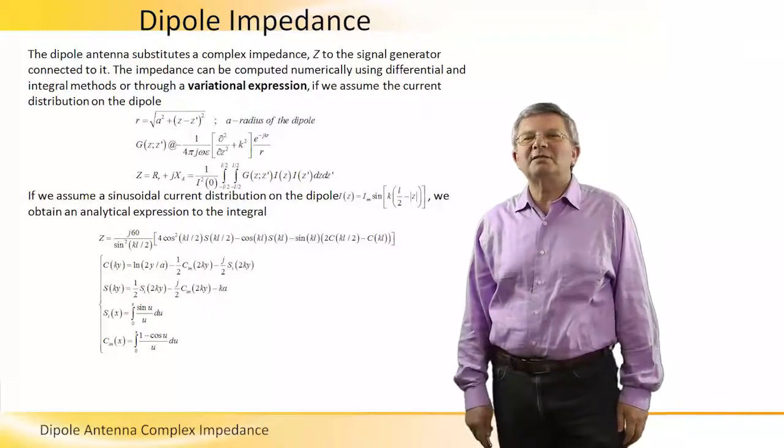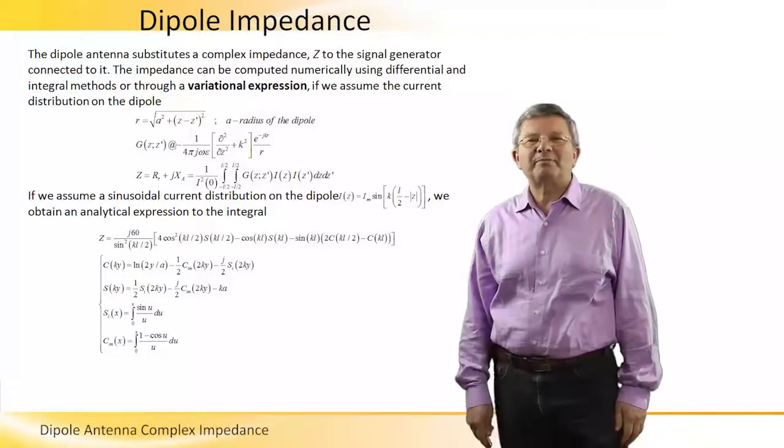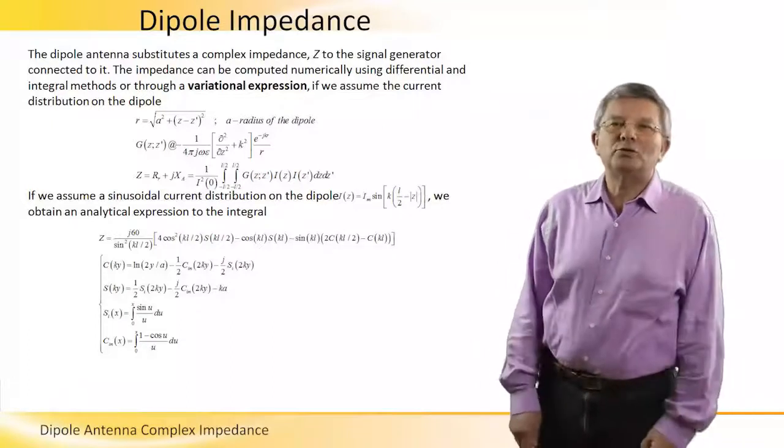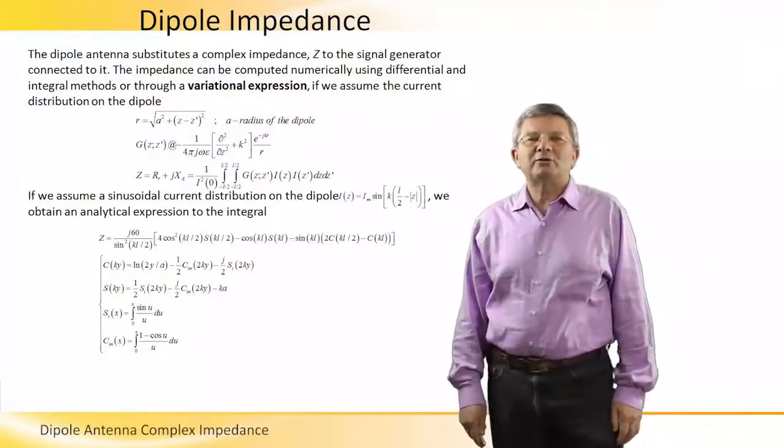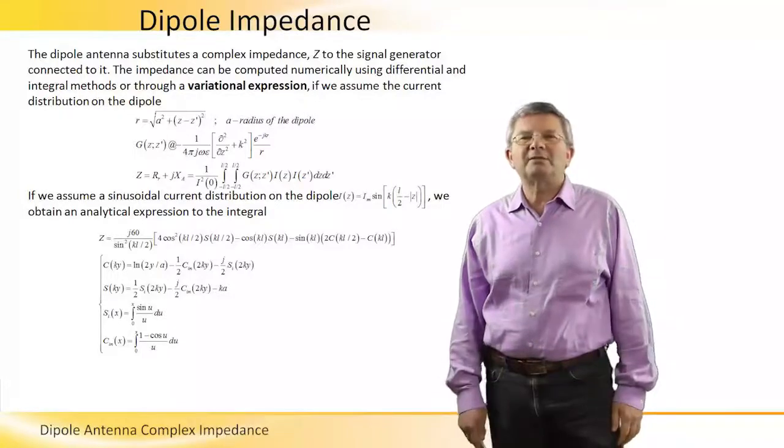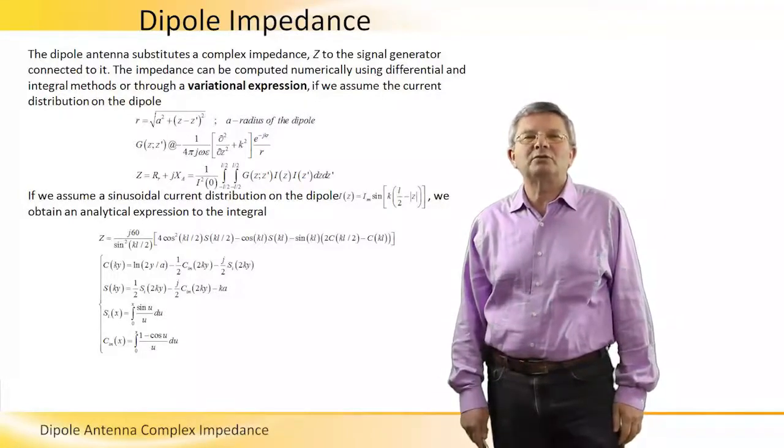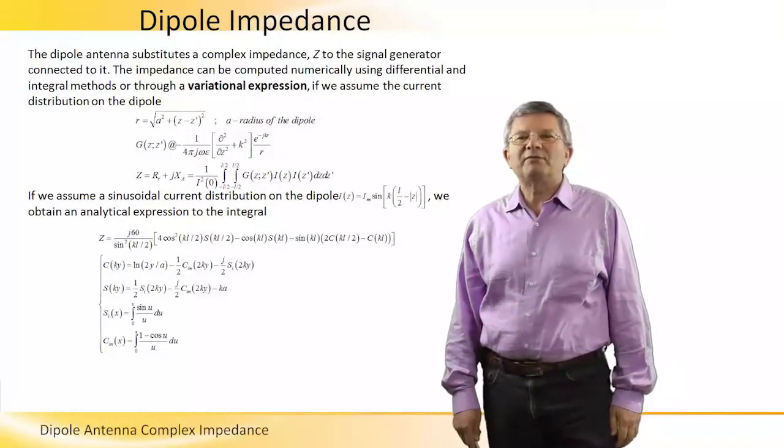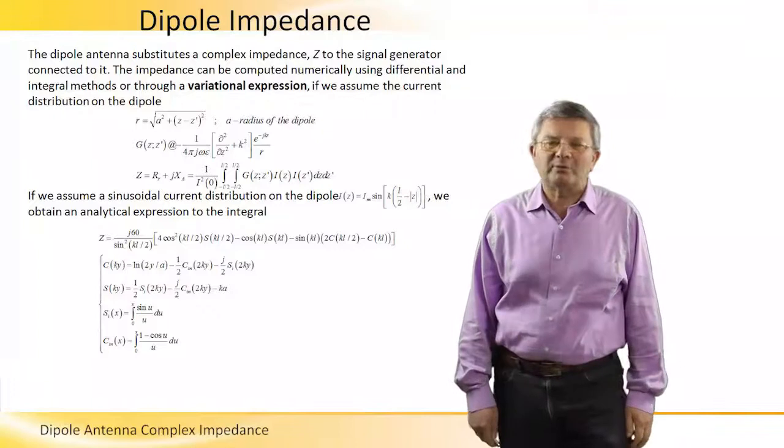This complex impedance is denoted by Z. The impedance can be computed numerically using differential and integral methods, which is quite complicated, but we have these tools today, or through a variational expression if we assume the current distribution on the dipole.